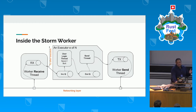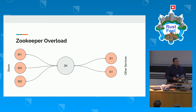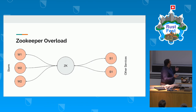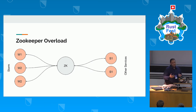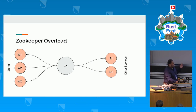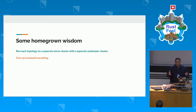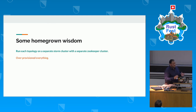Another problem we started to face is that the larger the Storm cluster we had, the more overloaded ZooKeeper started to become. It became very difficult to debug because Storm uses ZooKeeper for heartbeats to maintain the state of the stream. And if you're using a single ZooKeeper cluster for other services as well, it becomes a big mess to debug. Some homegrown wisdom that started occurring in our team was to just keep each topology at a separate Storm cluster — which is a very terrible idea — and you end up over-provisioning for everything.